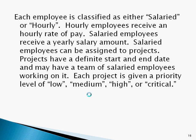Let's take this a little further. Each employee is classified as either salaried or hourly. Hourly employees receive an hourly rate of pay. Salaried employees receive a yearly salary amount. Salaried employees can be assigned to projects. Projects have a definite start and end date and may have a team of salaried employees working on it. Each project is given a priority level of low, medium, high, or critical.